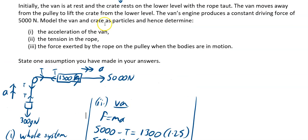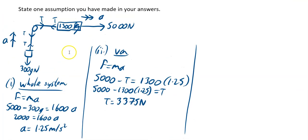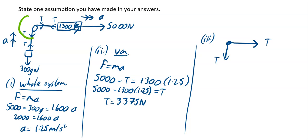The last part is the force exerted by the rope on the pulley when the bodies are in motion. Let's have a look at our pulley — we're going to treat it as a particle. Here is a diagram of your pulley. You've got a tension going this way, a tension going this way, and a tension going this way — those are the forces on the pulley. One going to the right and one going vertically down. We want to redraw this as a right angle triangle, and put in the tensions which we know are 3375 newtons horizontally and 3375 newtons downwards.